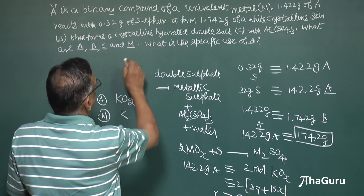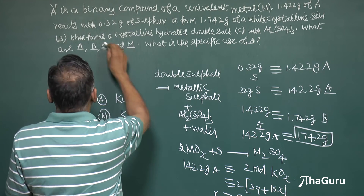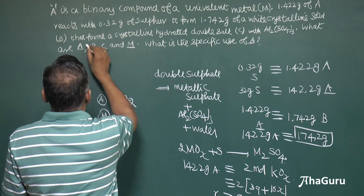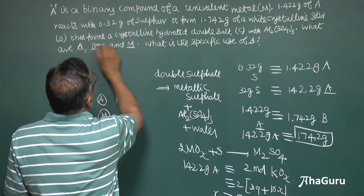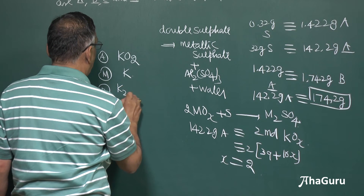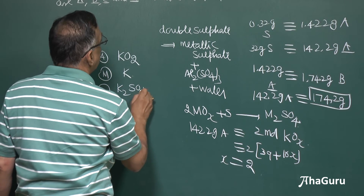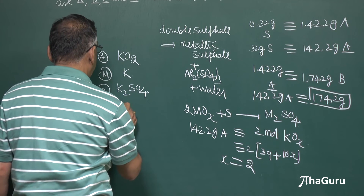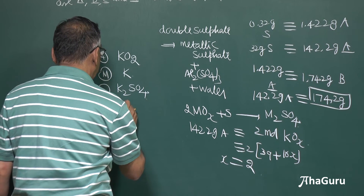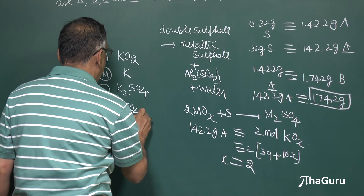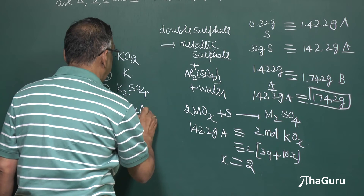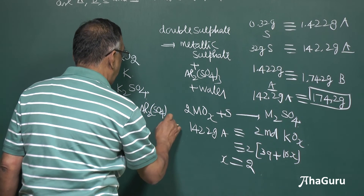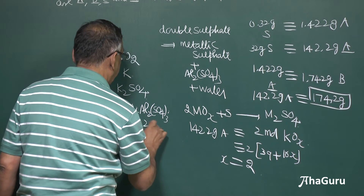The white crystalline solid B must be K₂SO₄ — potassium sulfate. And the hydrated double salt C must be potassium alum: potassium sulfate · aluminium sulfate · 24H₂O.